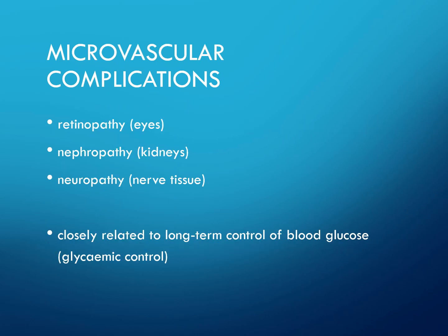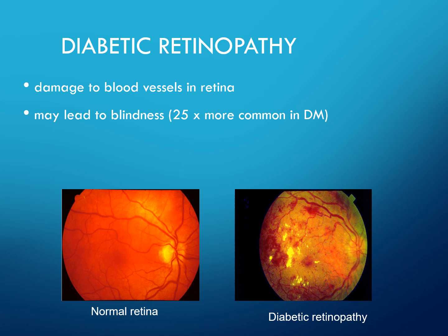Microvascular complications include retinopathy, nephropathy, and neuropathy. These are closely related to long-term glycaemic control. Diabetic retinopathy involves damage to the blood vessels of the retina and may lead to blindness; it is 25 times more common in diabetes mellitus.